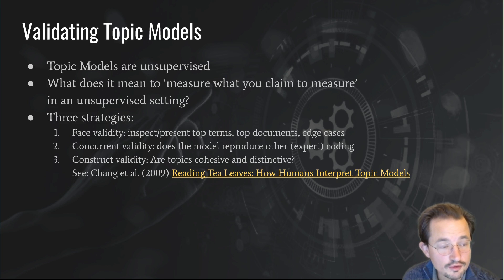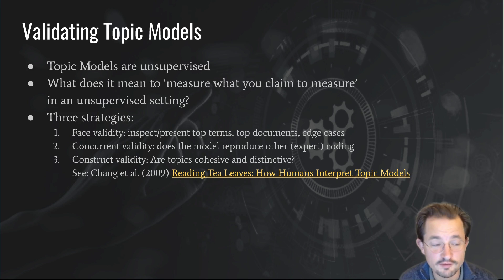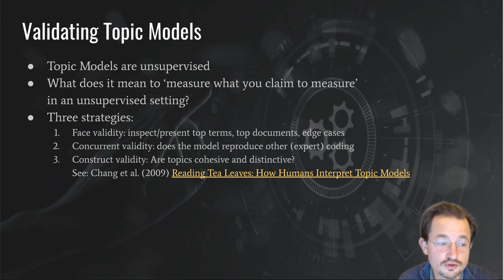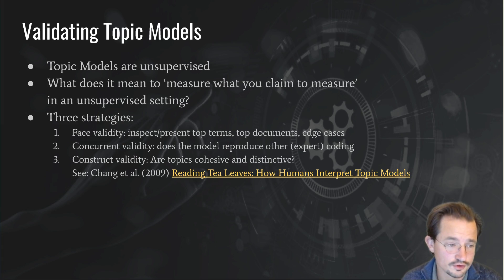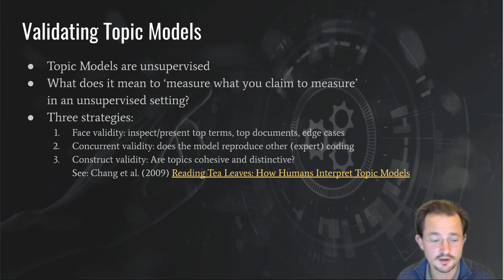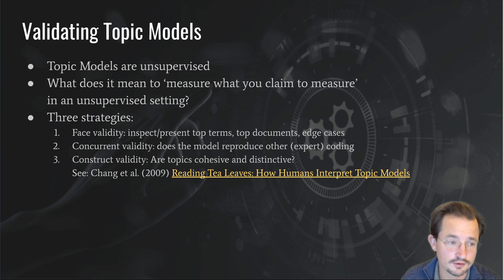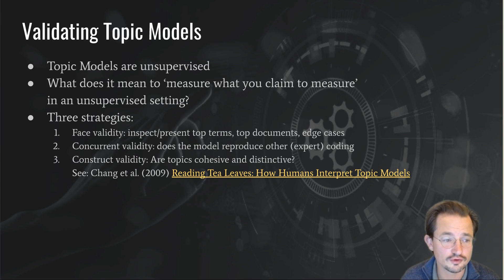Every time I talk about automatic text analysis, I stress that you need to validate the results. For a dictionary or a supervised machine learning model, that makes sense — if you claim you have a dictionary to measure economic news, you can code yourself whether the news is indeed about the economy, and see whether the dictionary found the same articles. Or better, you have multiple experts code a gold standard dataset and compare against it.